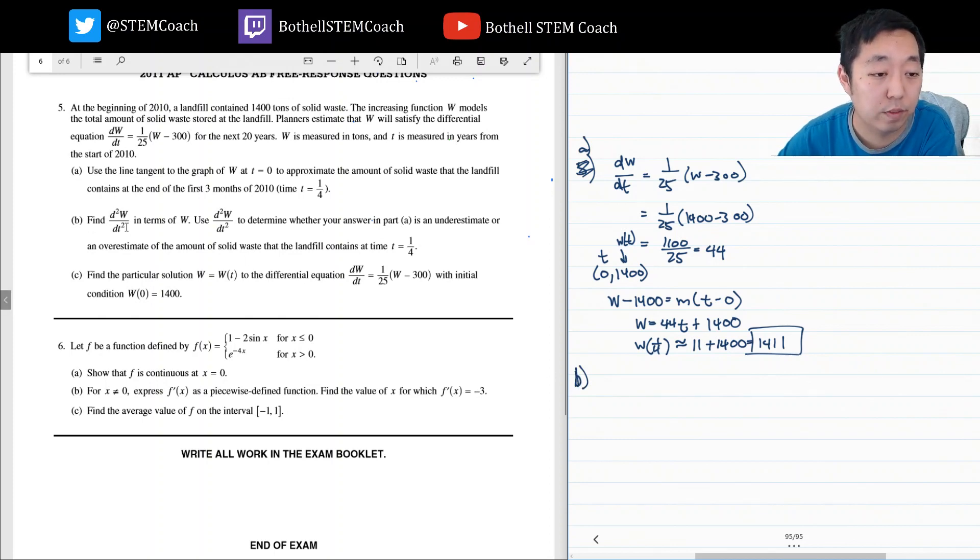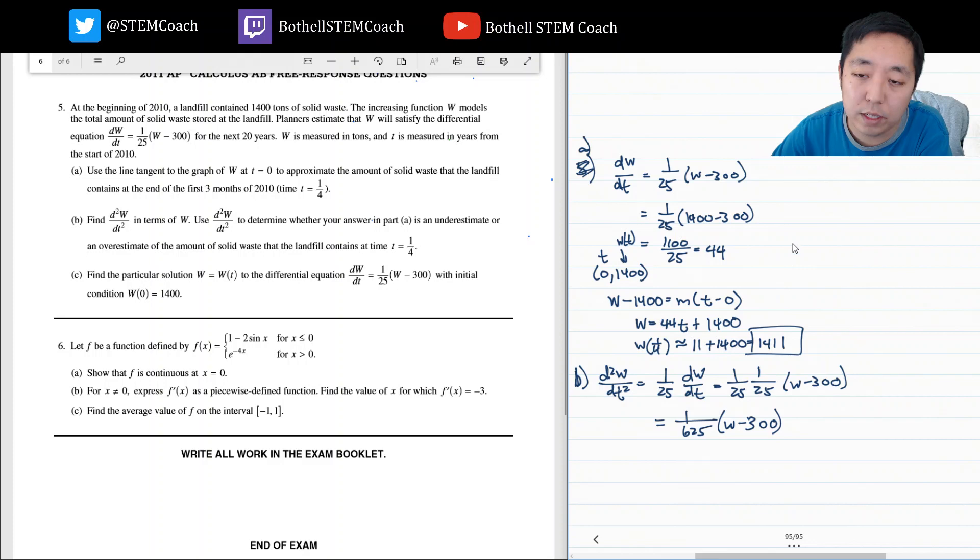Find the second derivative of W in terms of W and use the second derivative to determine whether your answer in part A is an underestimate or overestimate. So the second derivative of this equation is, I just took the derivative of this equation. It's 1 over 25 times the derivative of this, which is just dW/dt. And what is dW/dt? It's 1 over 25 times W minus 300. So I get 1 over 625 times W minus 300.